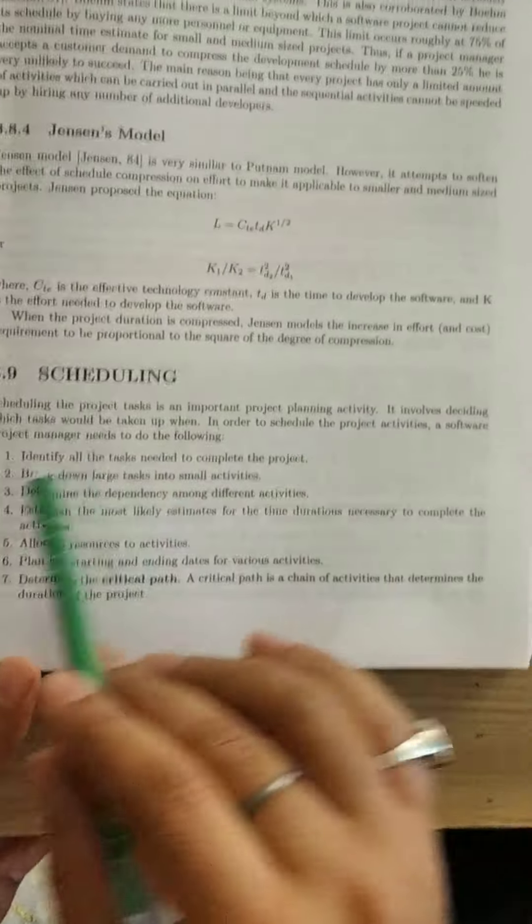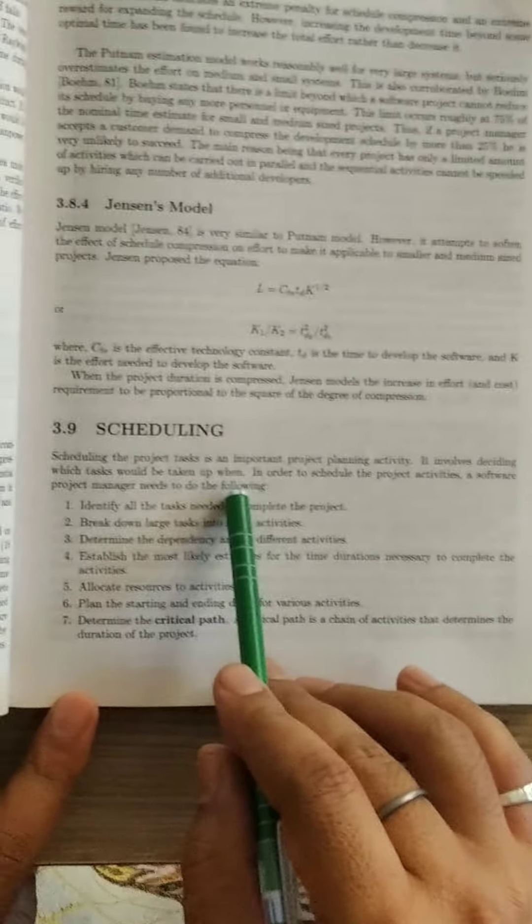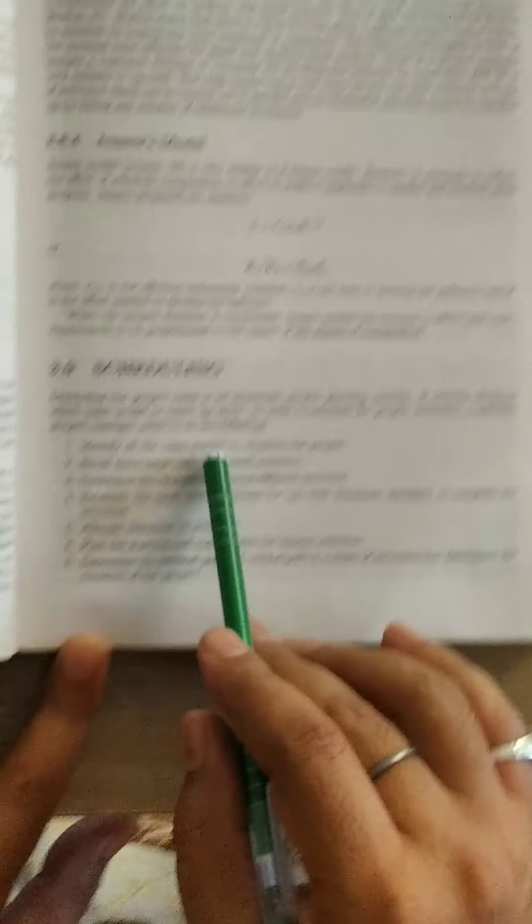Scheduling the project task is an important project planning activity. It involves deciding which tasks would be taken up and when. There are different properties and activities carried out in scheduling.